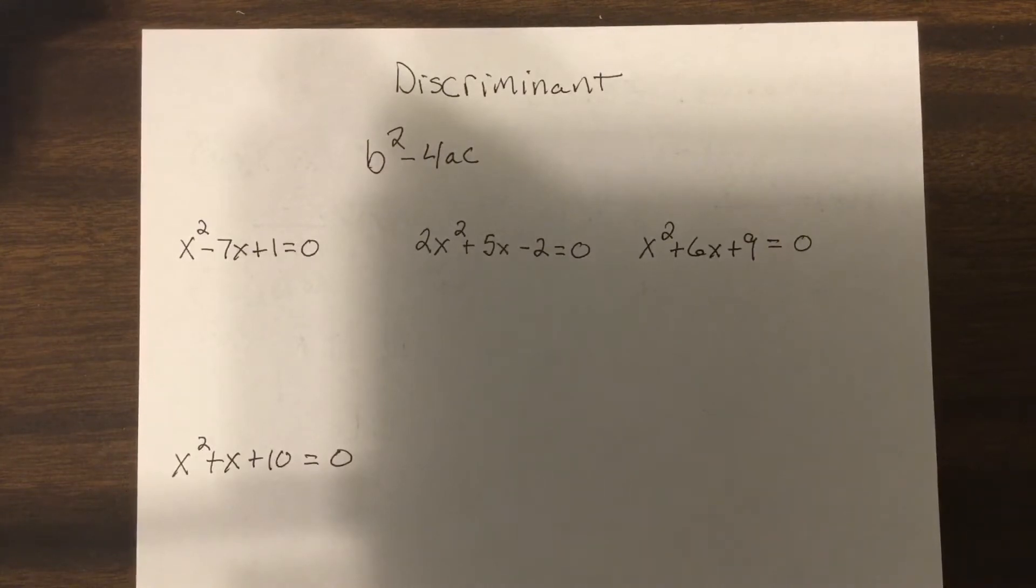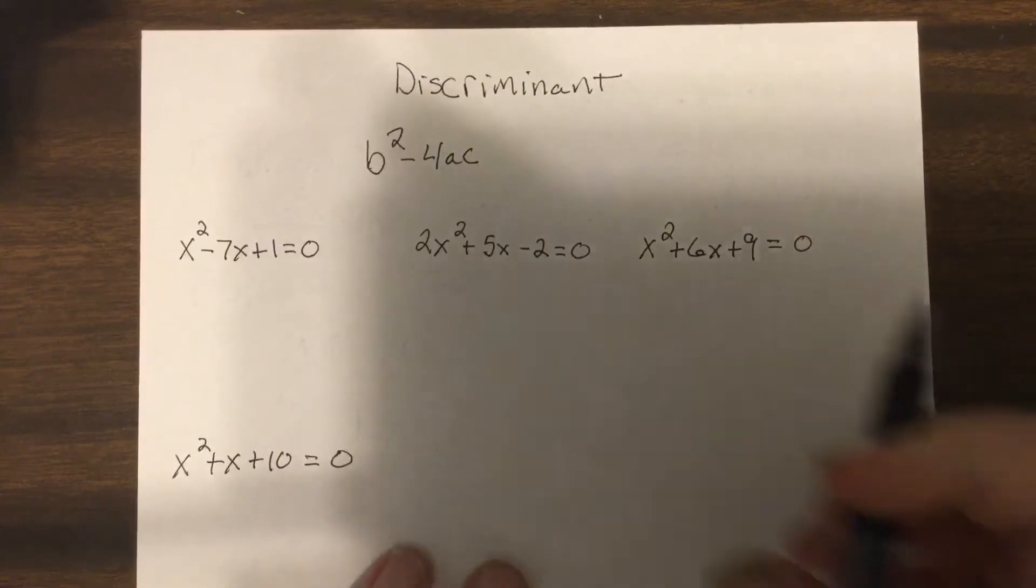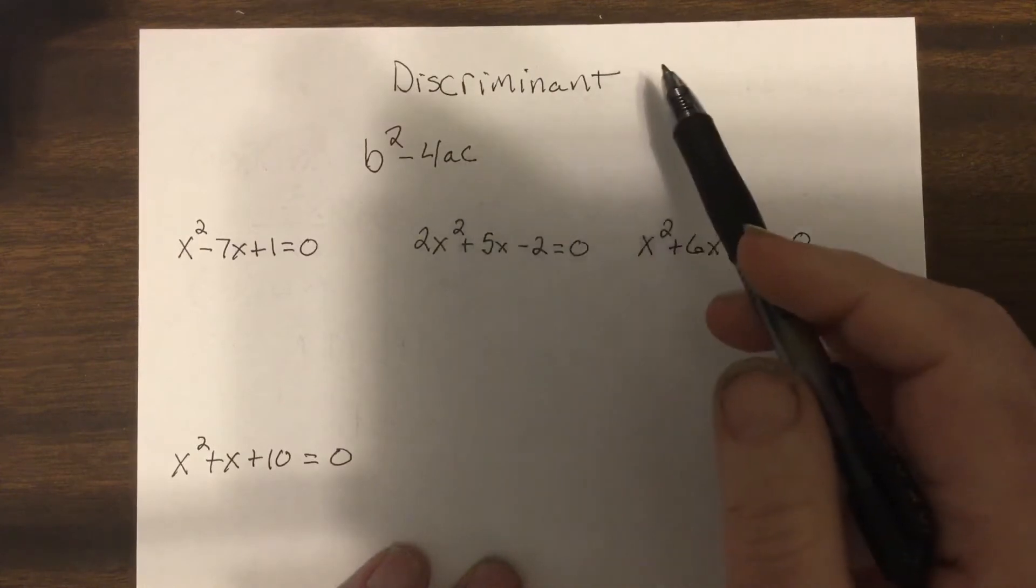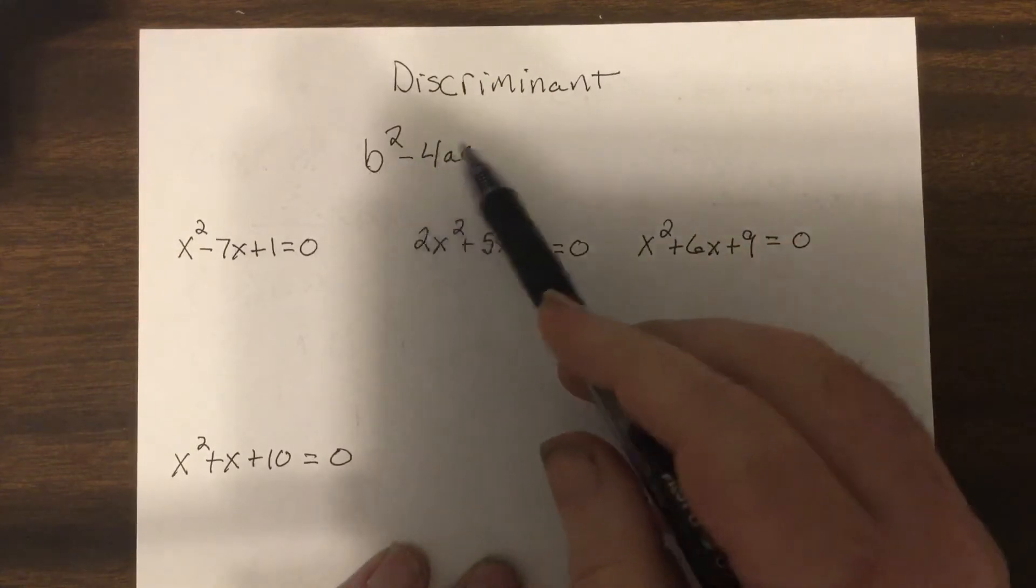They came up with a formula to show what type of answers you'll have, and it's called the discriminant. It's the term underneath the square root in the quadratic formula, b squared minus 4ac.